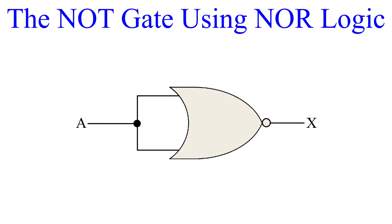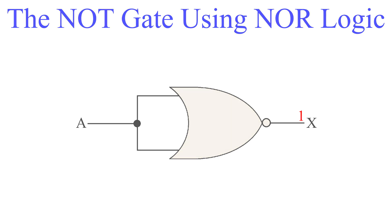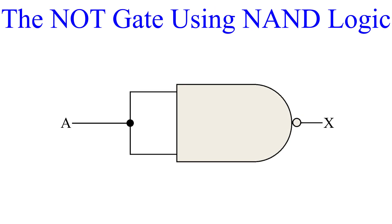We start with the NOT gate. This is the easiest gate of all — you only need one NOR gate to create an inverter. Simply tie both inputs together so whatever you input, you get the opposite output. Now let's look at the NAND version of the NOT. It is the same: both inputs are tied to share the input and the output is the reverse.